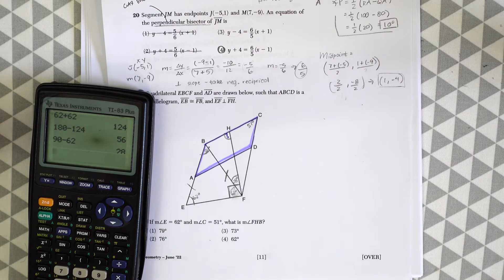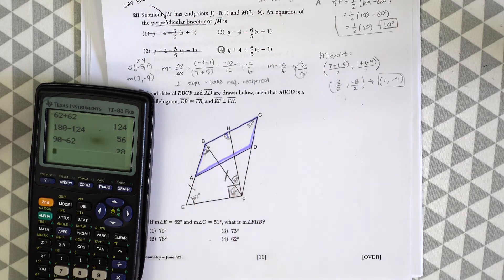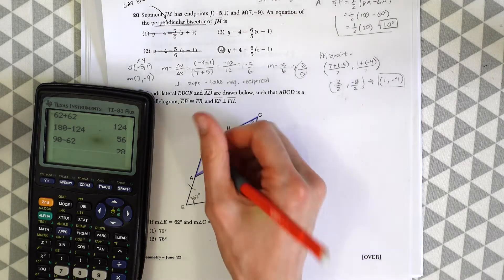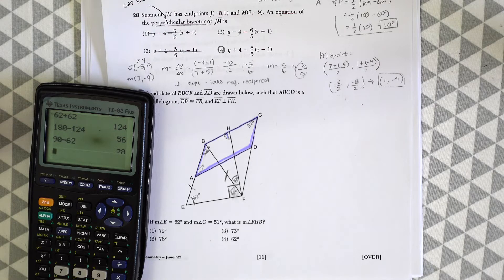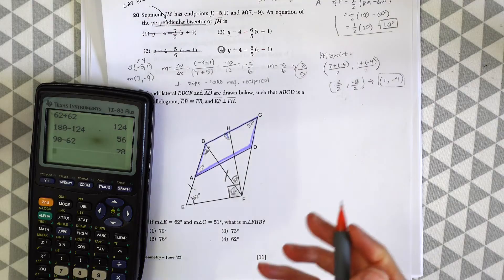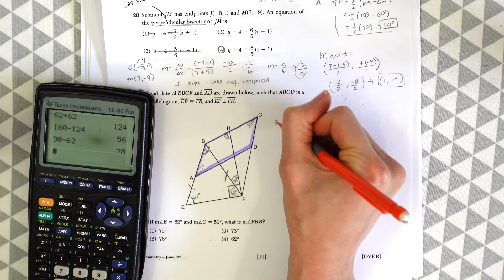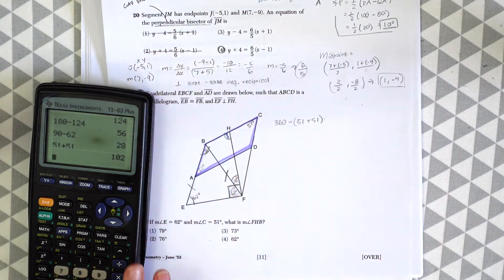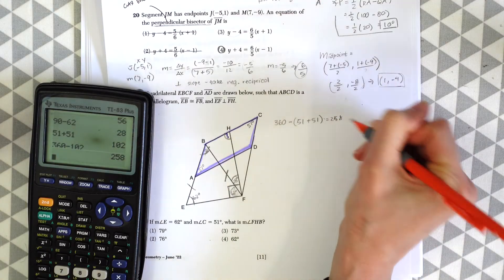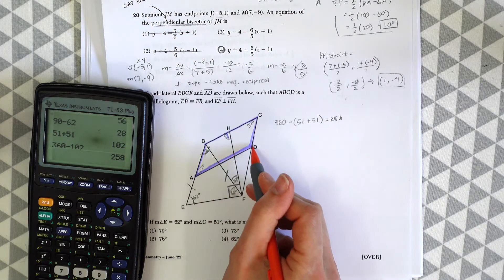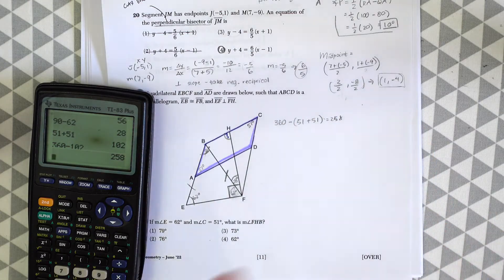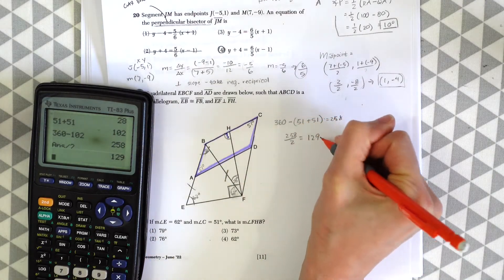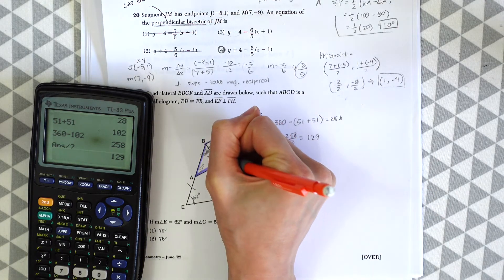Now using parallelogram properties. ABCD is a parallelogram, and opposite angles are congruent, so this is also 51 degrees. Interior angles add up to 360 degrees. 360 minus (51 plus 51) equals 258. These two angles, B and D, add up to 258, but they're equal to each other. So 258 divided by 2 gives us 129 degrees for each.